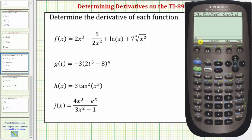The sequence that we enter is the function, comma, the variable, closed parenthesis. So let's go ahead and enter the function F of X. We'll enter two X raised to the power of three, minus — and we need to be careful about entering this fraction.